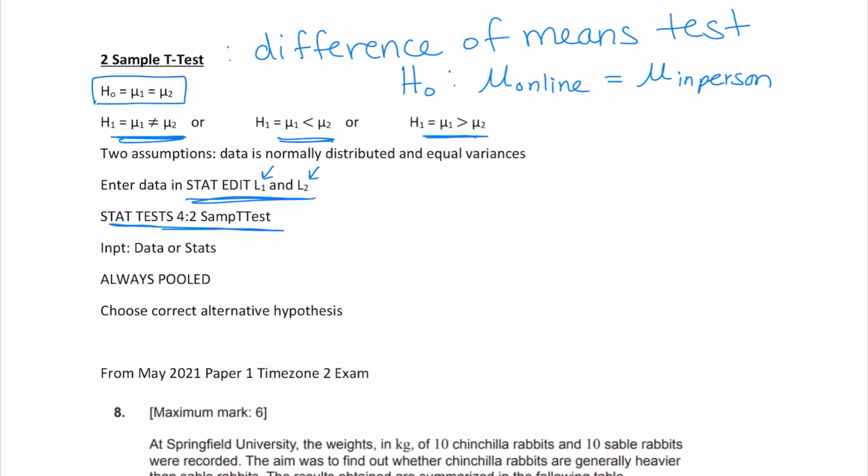You're going to input either data, if you actually have data that you have put into list one and list two. If not, you would choose stats if all they did was give you the mean and standard deviation. Always pooled. There's going to be a part of the calculator that's going to ask you if the data is pooled. You're always going to say yes for the AI course exam. Pooled meaning equal variances. Then choose the correct alternative hypothesis, and that is how you're going to get your p-value to make a conclusion.